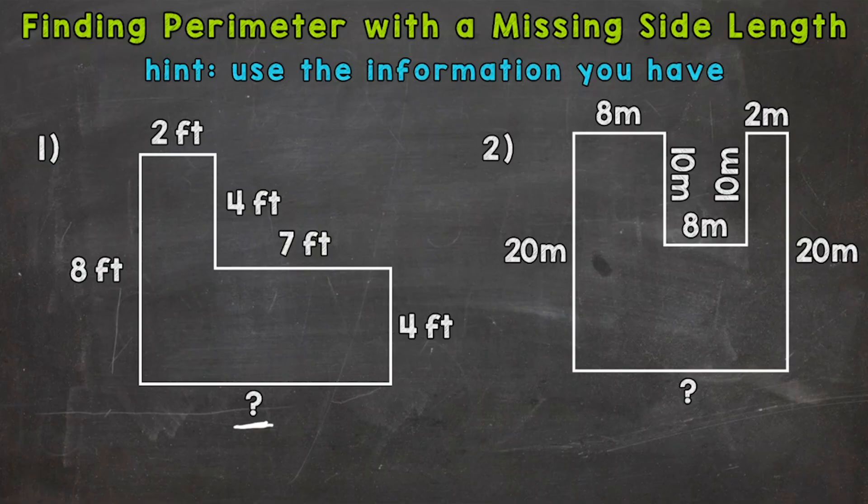So we need to use the information that we have. We're going to take a look at this two feet up here. We're going to use this and another portion of that figure in order to determine what our missing side length is going to be.